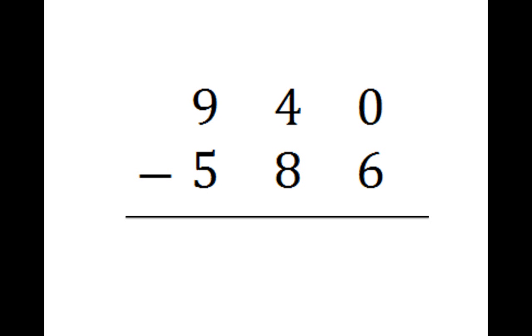In the arithmetic books, typical language would say 6 from 0 units we cannot. We have to go to the 10s. Now from 4 tens, there's 3 tens. Then we have 10 ones. 10 minus 6 is 4.